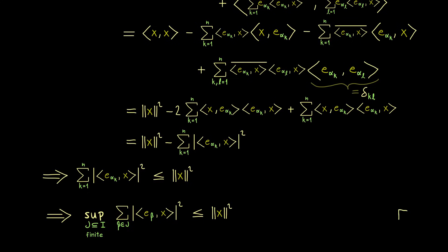That is the proof of Bessel's inequality as a calculation with inner products. This is related to calculating the length of a vector with respect to a given ONS. The best thing would be to have equality in Bessel's inequality, which is not possible in general for an ONS, but we expect that an ONB — the best ONS — can actually achieve it. This is something we will discuss in the next videos. I hope to see you there, and have a nice day. Bye bye.